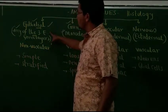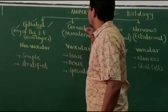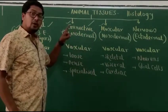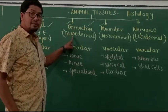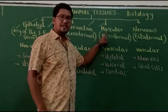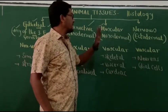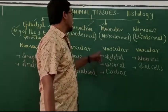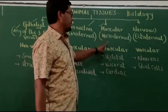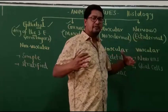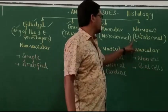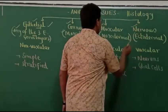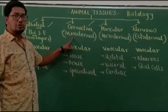Connective tissues, whatever we have in our body, are derived from the mesoderm of the embryo — so connective tissues are mesodermal in origin. Muscular tissue is also mesodermal in origin; all the muscles we have in our body are derived from embryonic mesoderm. Nervous tissue — including brain, spinal cord, and variety of nerves — is derived from embryonic ectoderm, so nervous tissues are ectodermal in origin.